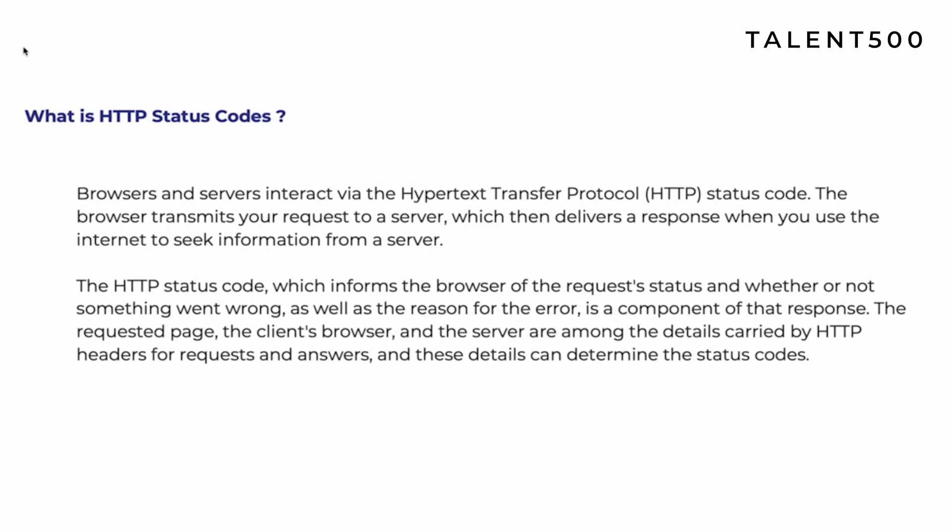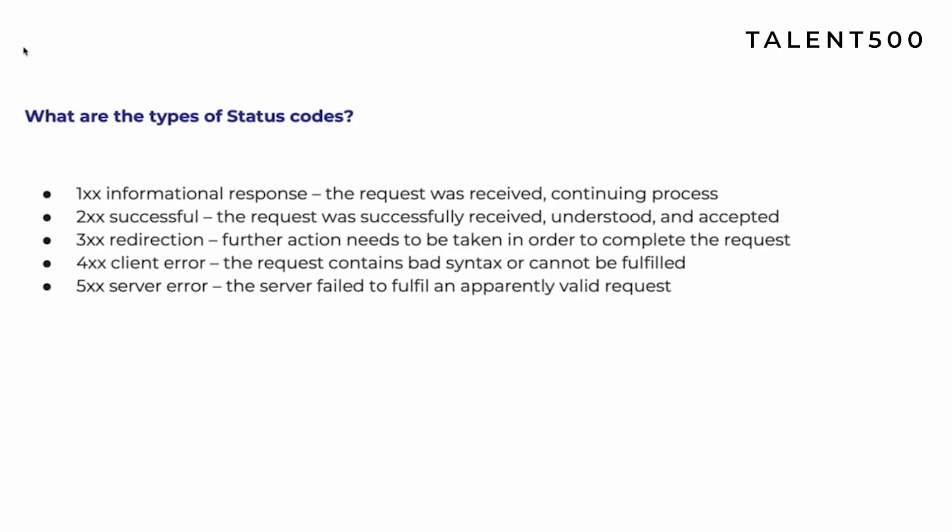The browser and server interact via HTTP status codes. The browser transmits your request to the server, which then delivers a response. Status code is essentially a health check of your request sent to the server. Always remember that status codes are what you need to validate first in an API testing project. Prepare with an example so you can explain clearly when needed.